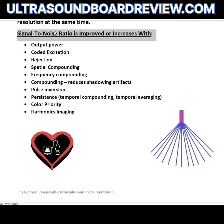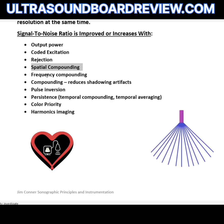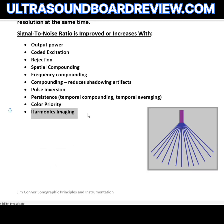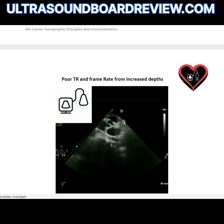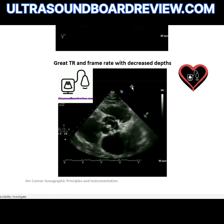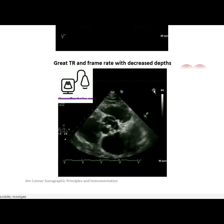Things that improve signal-to-noise ratio include: output power, coded excitation, rejection, spatial compounding or frequency compounding (any type of compounding), pulse inversion, persistence (also called temporal compounding and temporal averaging), color priority, and harmonic imaging. As shown in these images, increasing depth degrades temporal resolution and frame rate, while decreasing depth results in much better frame rate and temporal resolution.